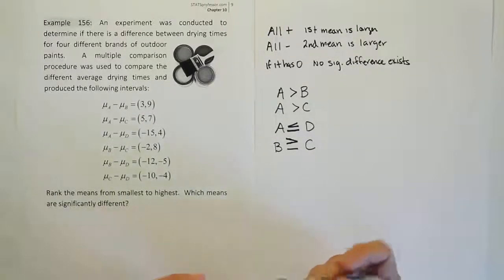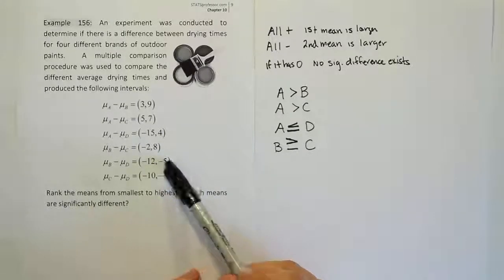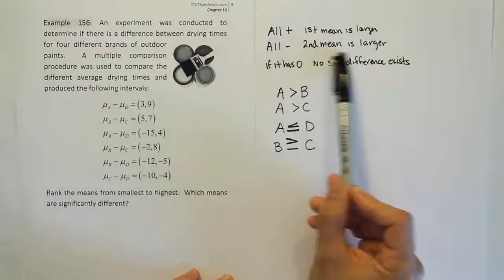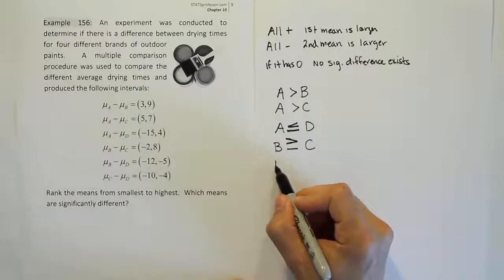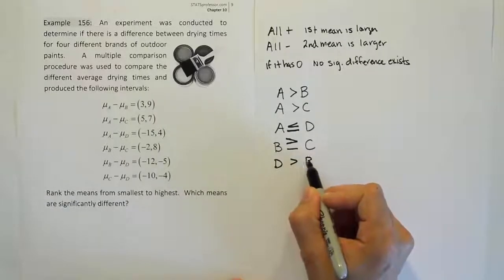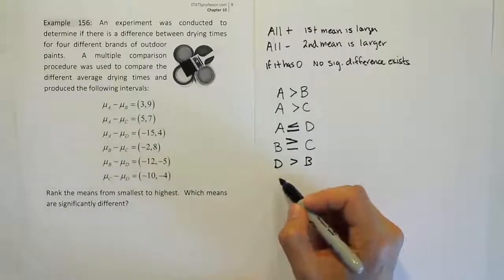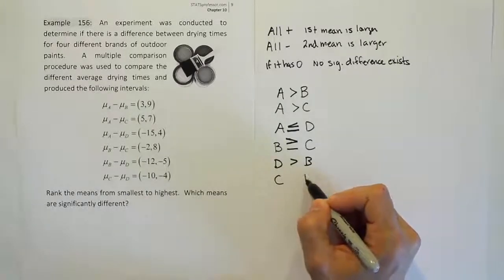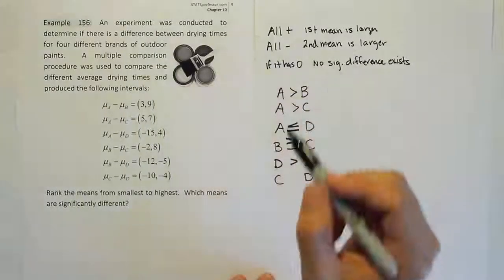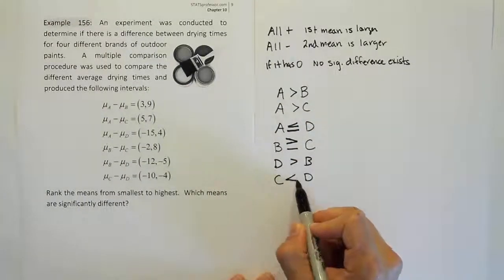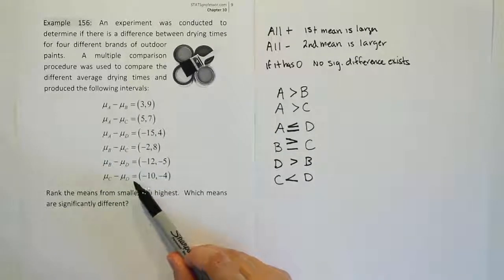Now we move on. The next interval compares B and D, and it's completely negative. If it's all negative, the second mean is larger, which means D is greater than B. Lastly, we have C and D compared, and that interval is also completely negative. If it's all negative, the second mean is larger — so D is bigger than C, since D was the second mean in our subtraction.